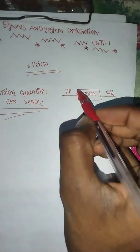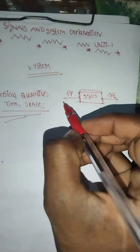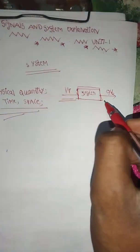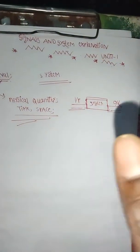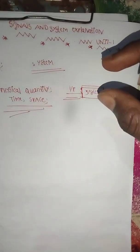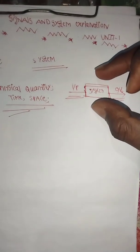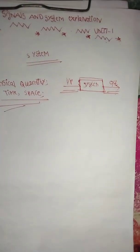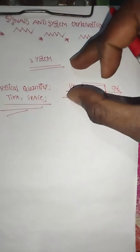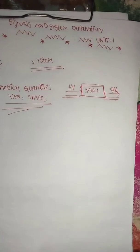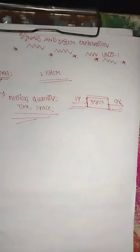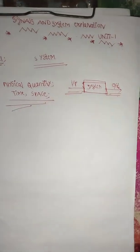In a system, for each new input there is a new output and a response. A system is a functional block — it contains a number of blocks. For each input, a unique output and response is obtained.